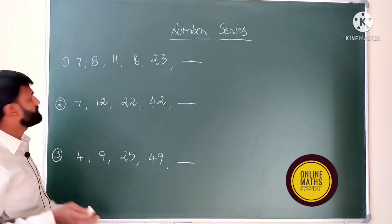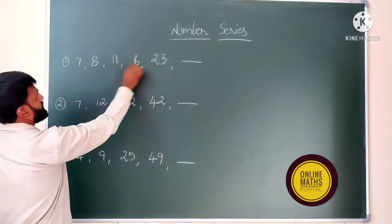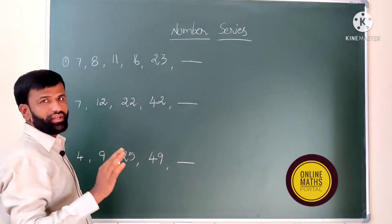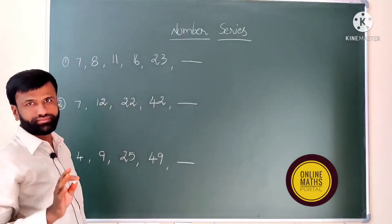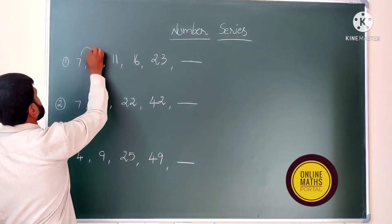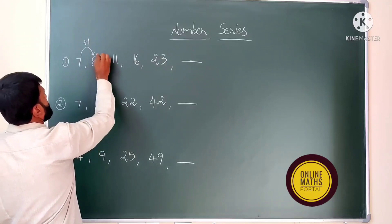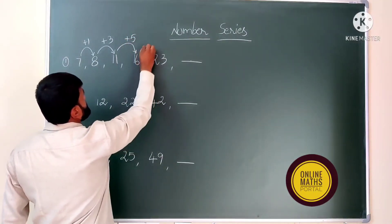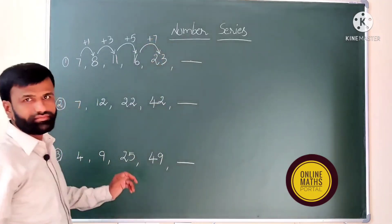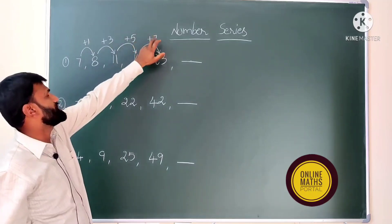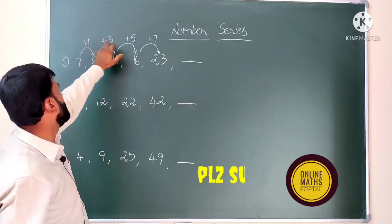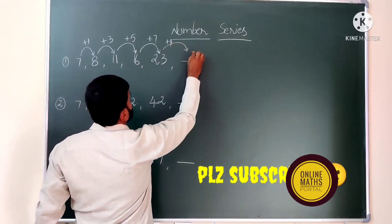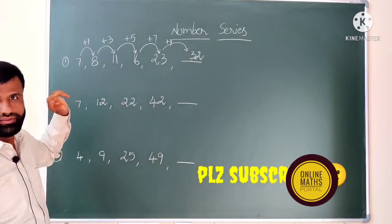Let's see some basic questions. First question: 7, 8, 11, 16, 23. Here 7 to 8 the gap is very small, so no doubt this question is addition. So: 7 plus 1 is 8, 8 to 11 plus 3, 11 to 16 plus 5, 16 to 23 plus 7. So plus 1, plus 3, plus 5, plus 7 — all these are consecutive odd numbers. So the next gap is plus 9, and 23 plus 9 is 32. The required answer is 32.